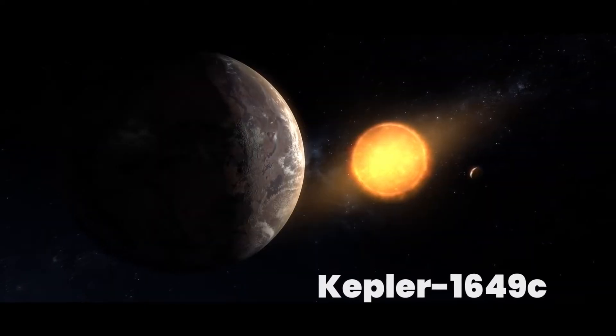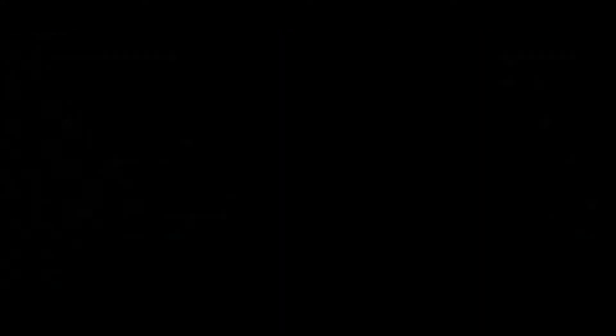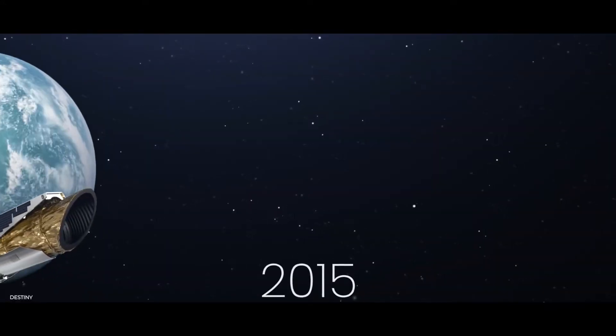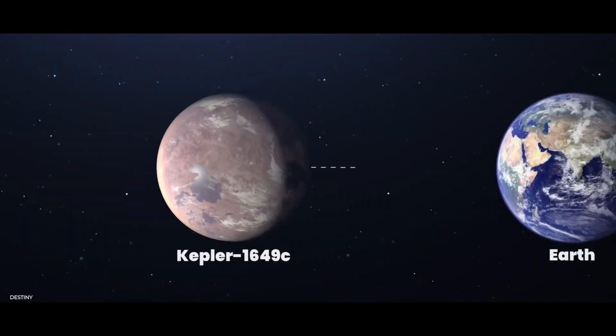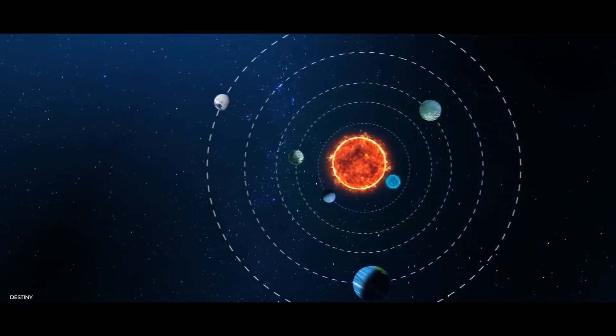Number 4: Kepler-1649c. This planet was discovered by NASA's Kepler Space Telescope in 2015. This exoplanet is similar in size to Earth and orbits its star's habitable zone.